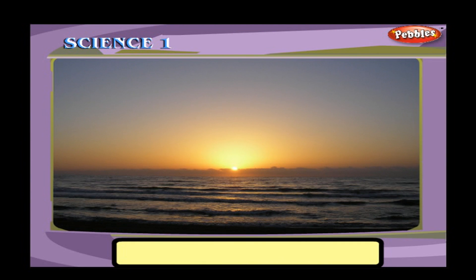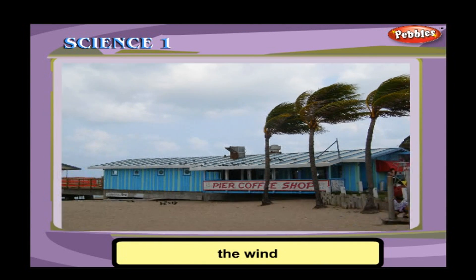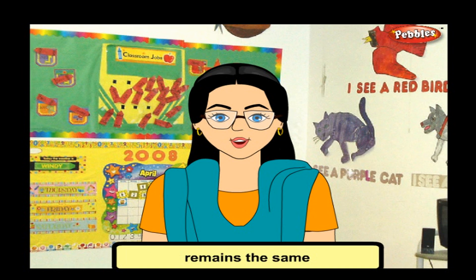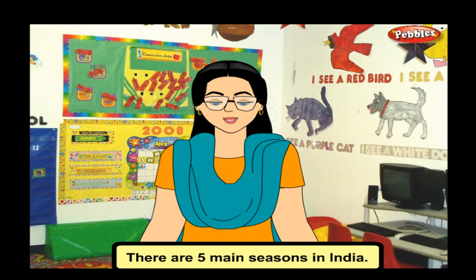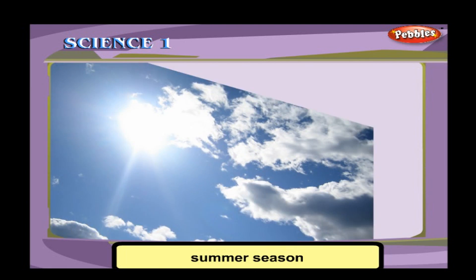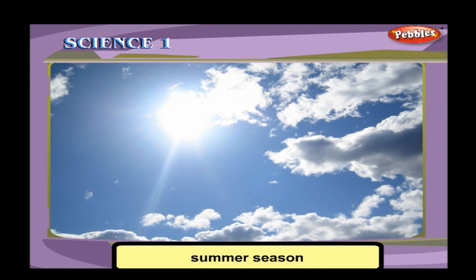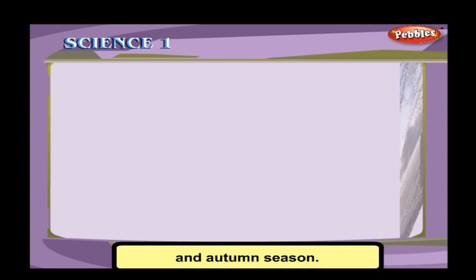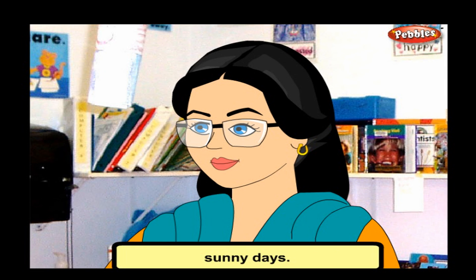The Sun, the wind, and the rain cause changes in the weather. When a particular weather remains the same for a period of time, it is said to be a season. There are five main seasons in India: the summer season, rainy season, winter season, spring season, and autumn season.